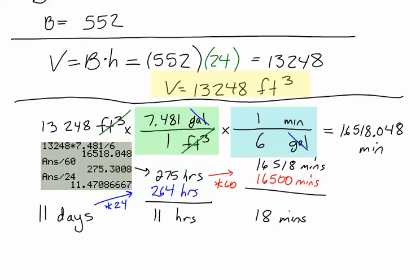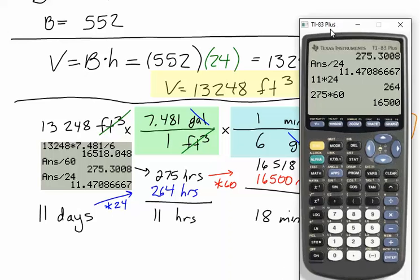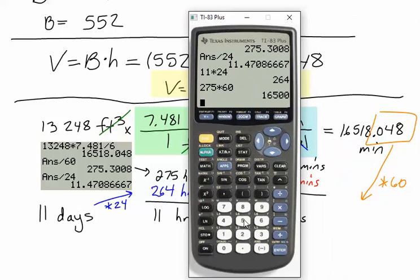And last but not least, what we're going to have to do is work with the seconds. So we have to take the decimal on the original number, and what we're going to do is multiply that by 60 to figure out how long this is going to be. So we'll take that 0.048, we will multiply it by 60, and we will get 2.88 seconds.